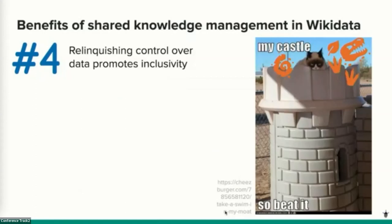Relinquishing total control over our collections data promotes inclusivity by recognizing that we may not be the ultimate authorities on every aspect, especially data related to people and collecting sites. Sharing people data on Wikidata provides a way to show who is doing what work, when and where, and to document their impact. Many individuals involved with collections are not fully acknowledged or have been misrepresented, especially women, non-white, and indigenous people, so Wikidata offers an opportunity for their records to be augmented or corrected.